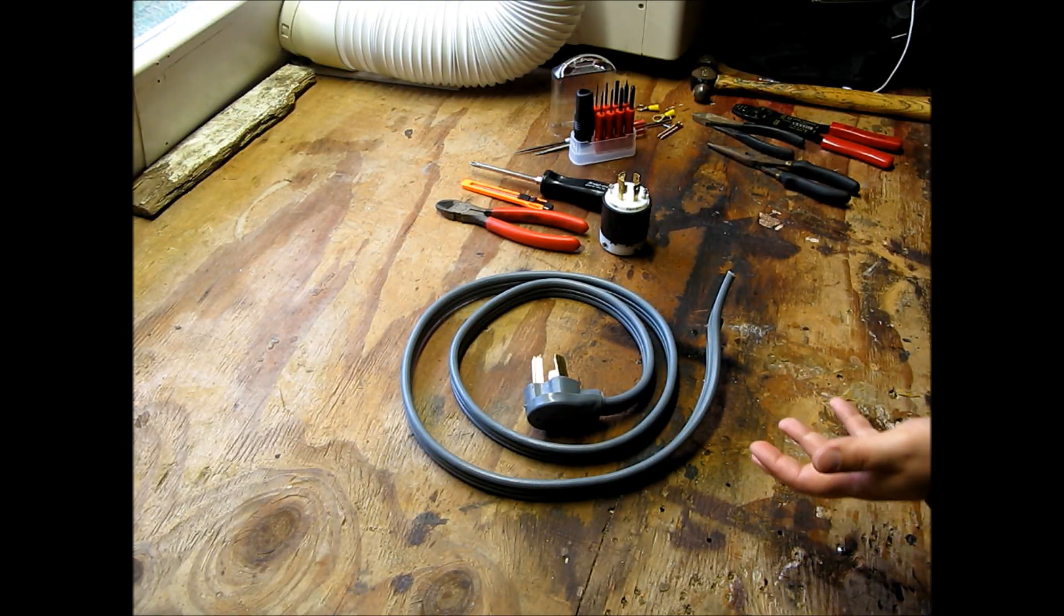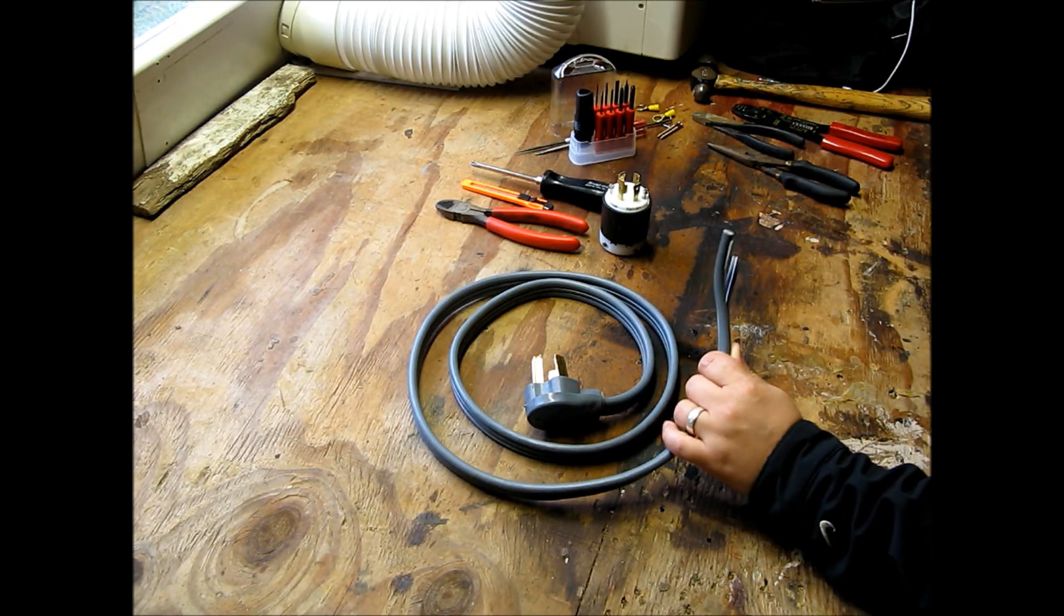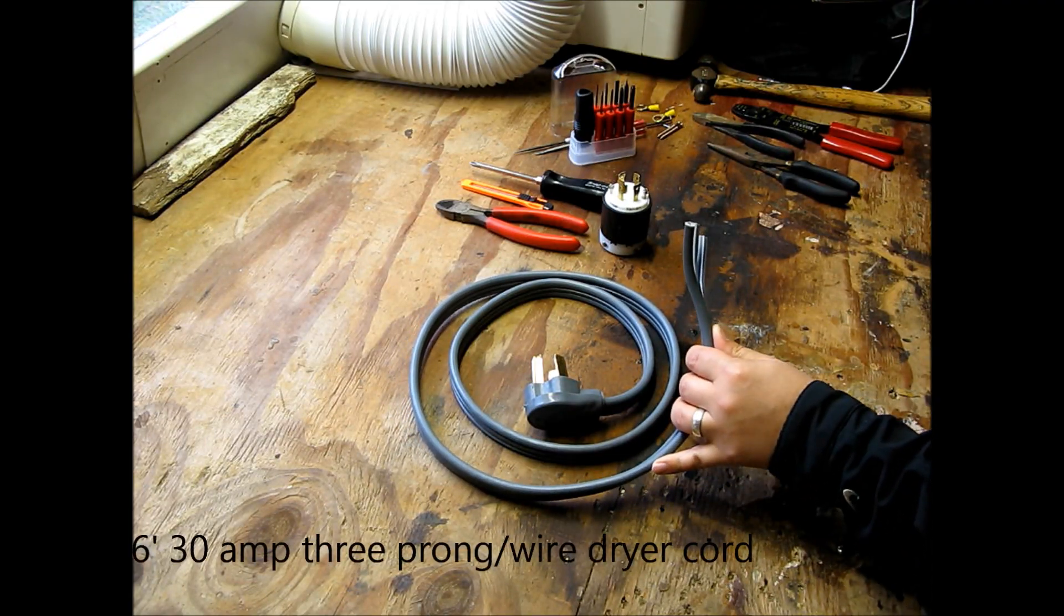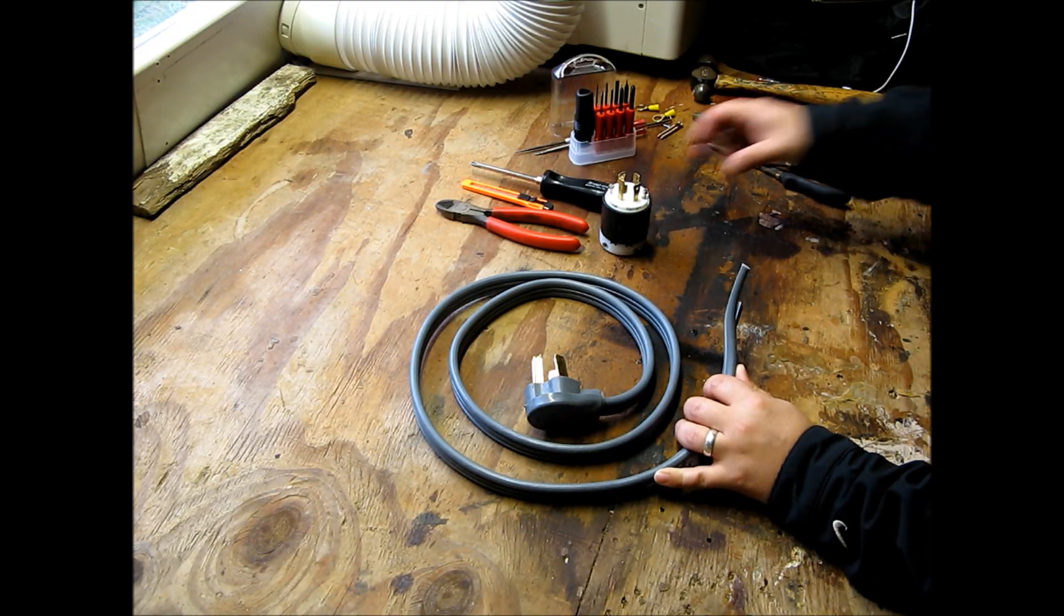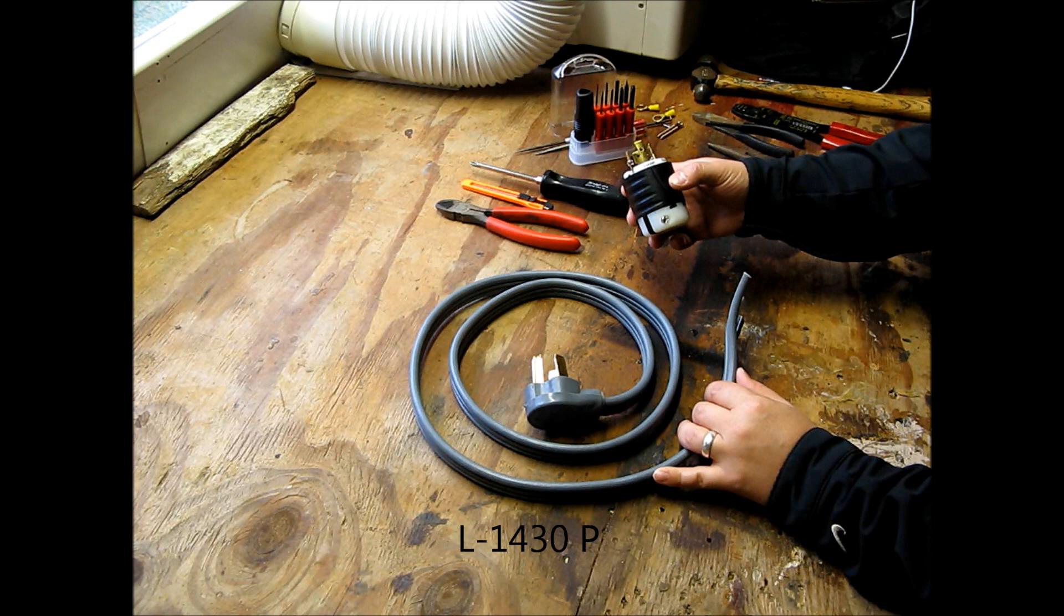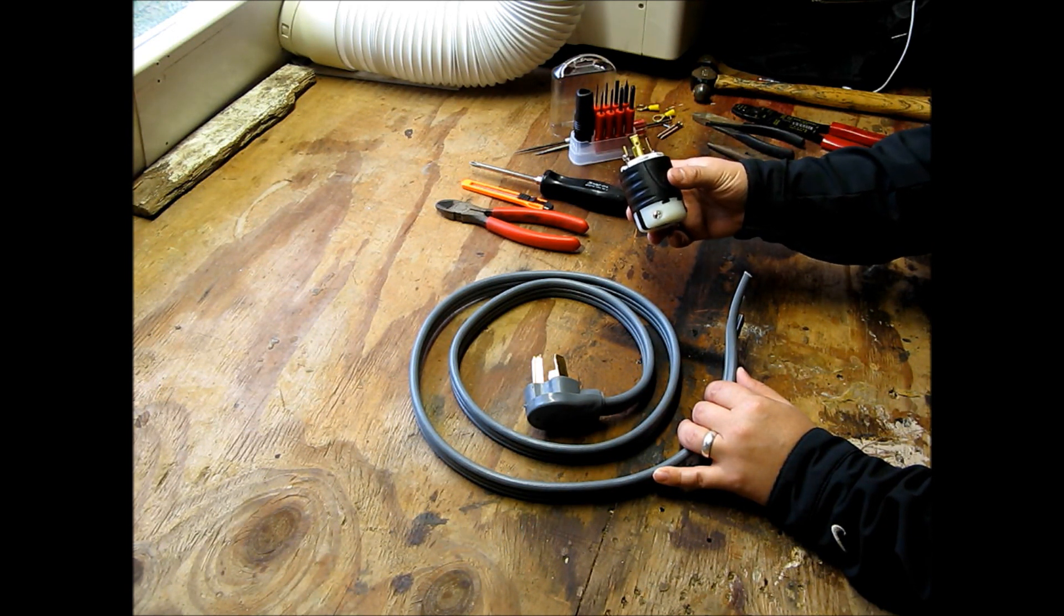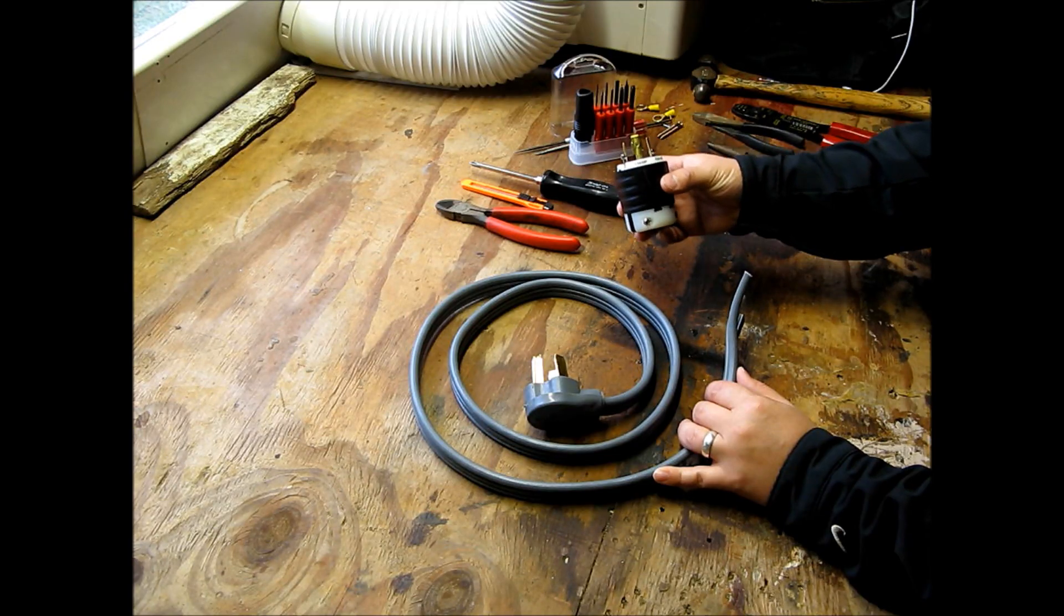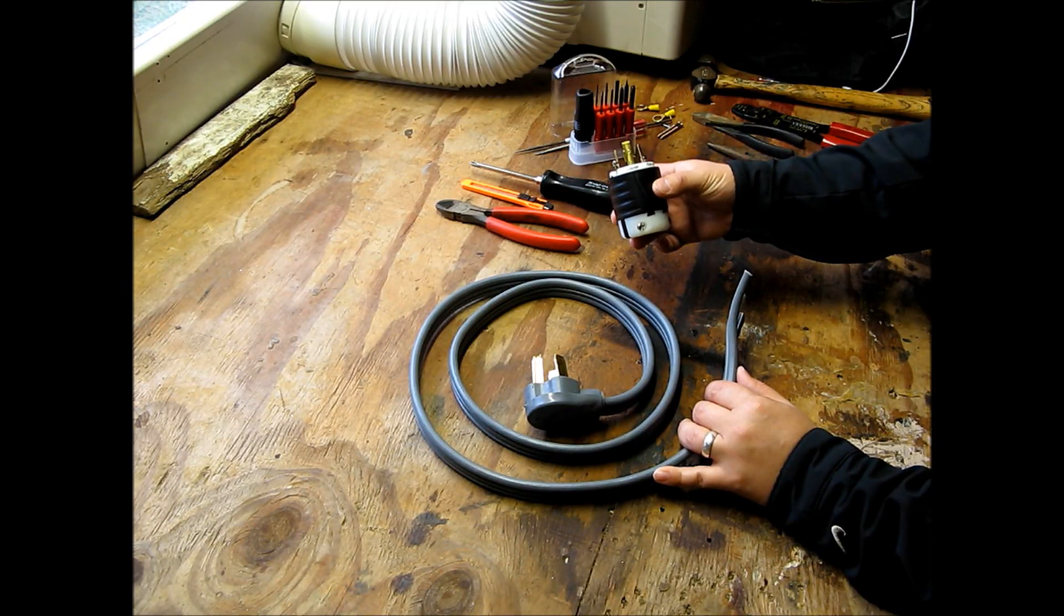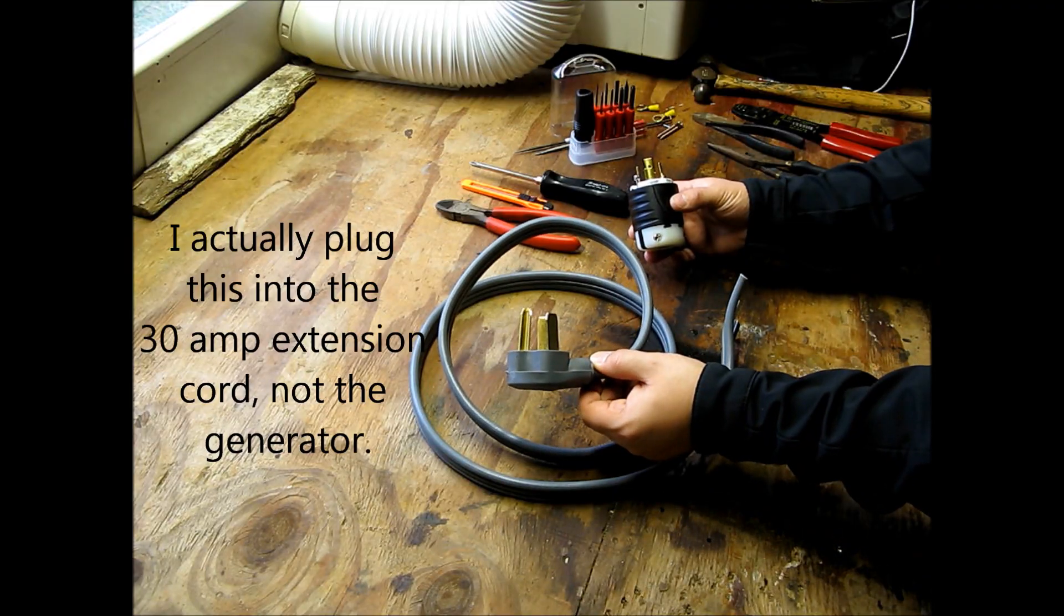For this project, the supplies and tools that I needed were a 30 amp 3-prong dryer cord, a L1430P plug, and this is a 30 amp plug. So this is the plug that will go into the generator, and then this is the plug that will go into the dryer outlet.